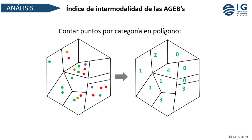Otro algoritmo es una variación del anterior: en lugar de contar el número de puntos, cuenta el número de categorías que existen dentro de cada AGEB. Por ejemplo, si tenemos seis puntos pero de cuatro colores diferentes, el resultado es cuatro. Como cada categoría representa una conexión a un modo diferente de transporte, estamos contando el grado de intermodalidad que existe en cada AGEB.